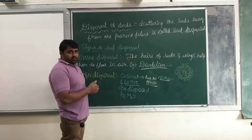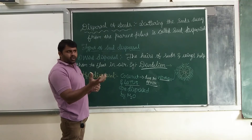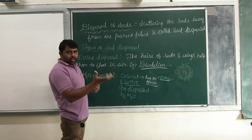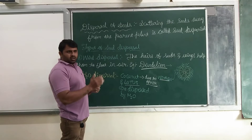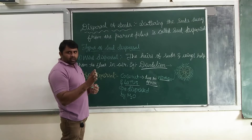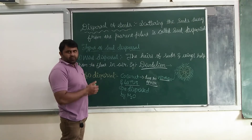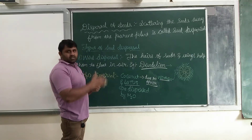Yesterday we discussed seed germination. For seed germination we need oxygen, water, and warm conditions. Oxygen comes from the air. We need to add water. Warm means sunlight.